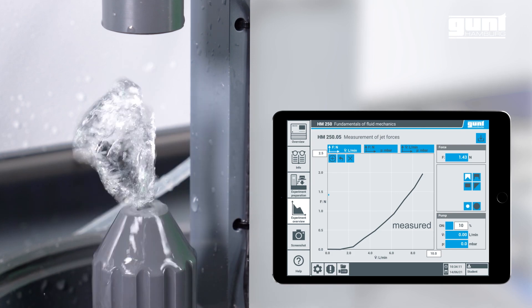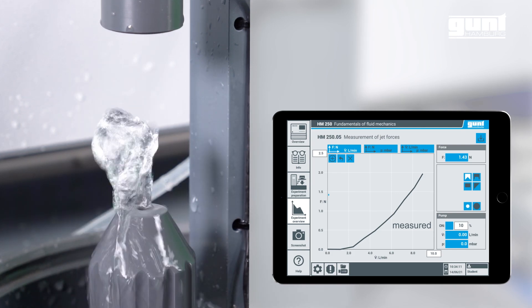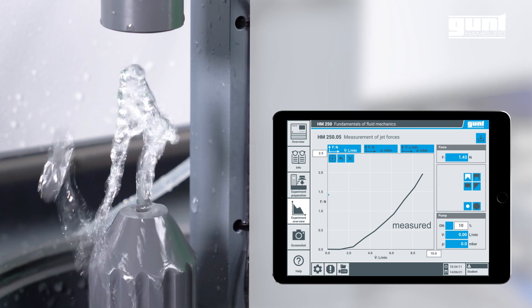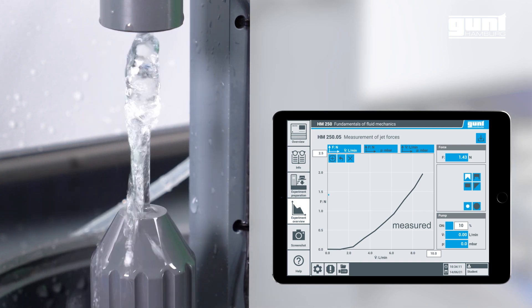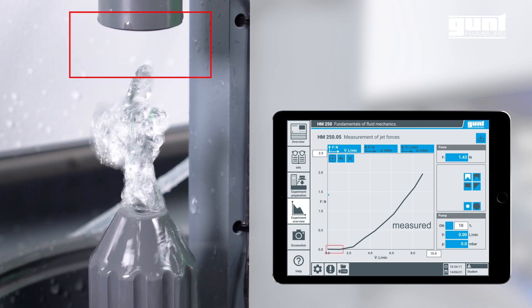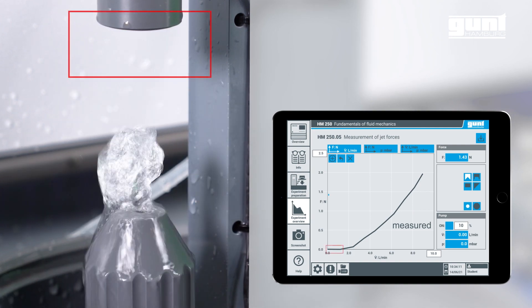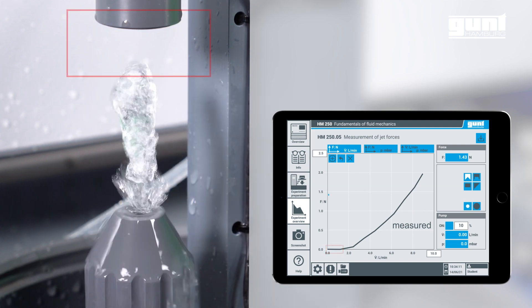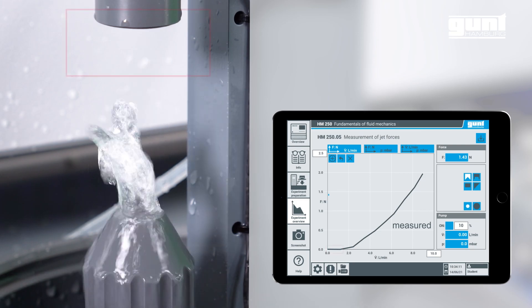As you can see from the result the graph only really starts making sense from about 25 to 30 percent pump capacity. The reason for this is quite simple. If we look closely at the waterjet at say 20 percent pump capacity you see that it does not have enough velocity to start with to overcome the height difference and reach the deflector at all.